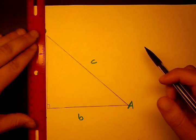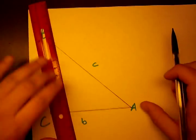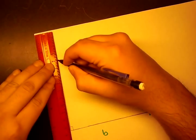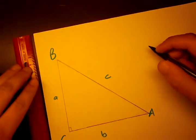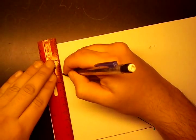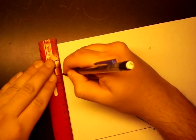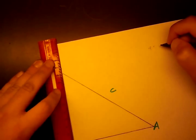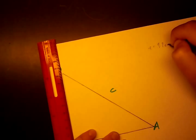First of all, we're going to have to measure all the sides. We're going to use centimeters to be accurate. Using our ruler, A comes out to be 9.7 centimeters.